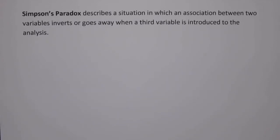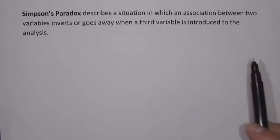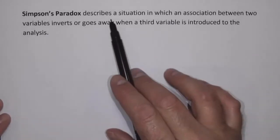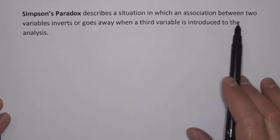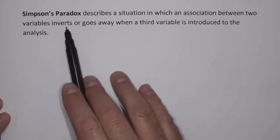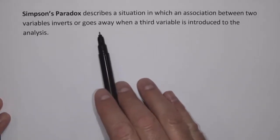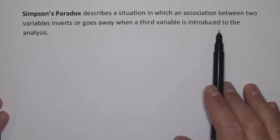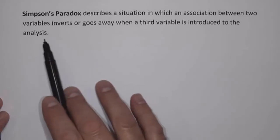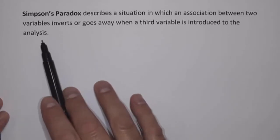In this video, we're going to look at an issue called Simpson's Paradox. Simpson's Paradox describes a situation in which an association between two variables inverts or goes away when a third variable is introduced to the analysis.